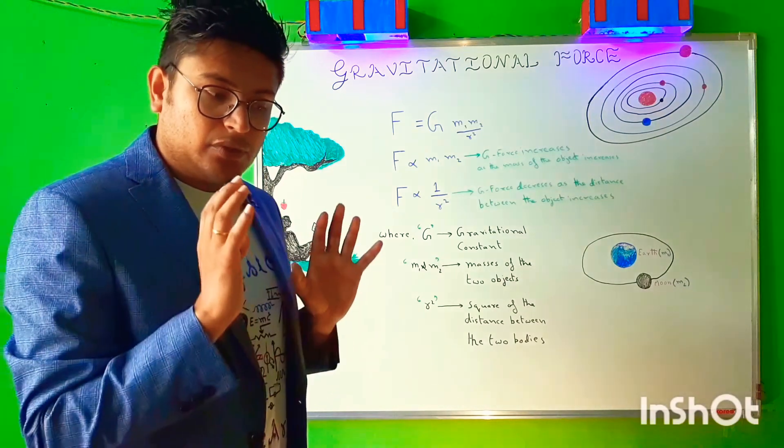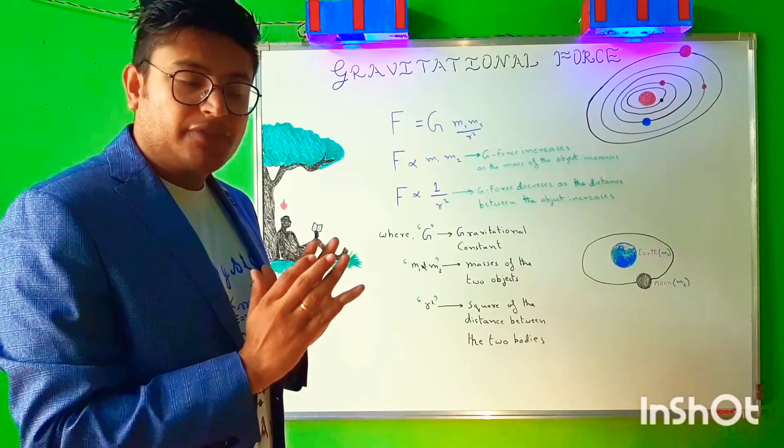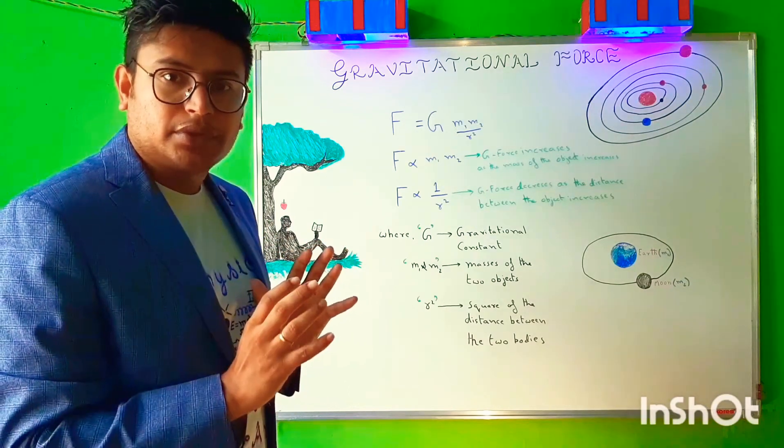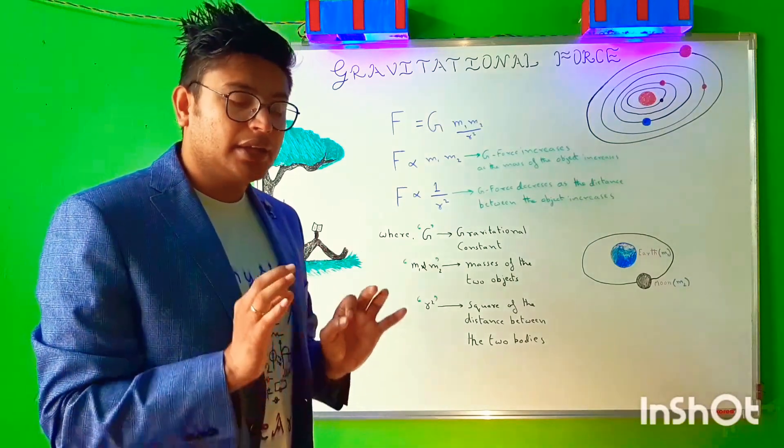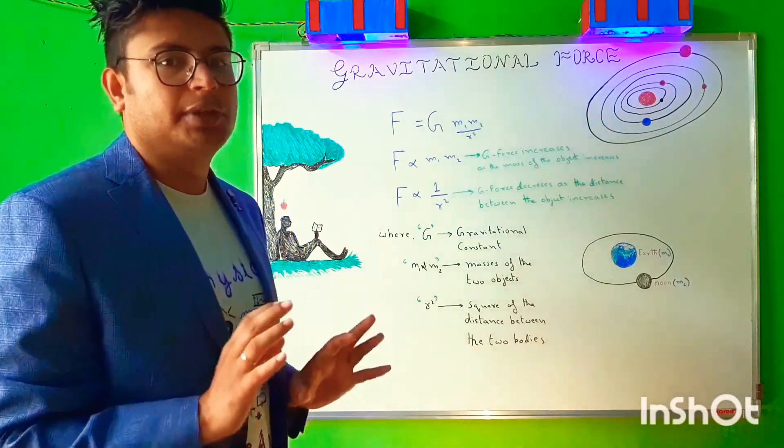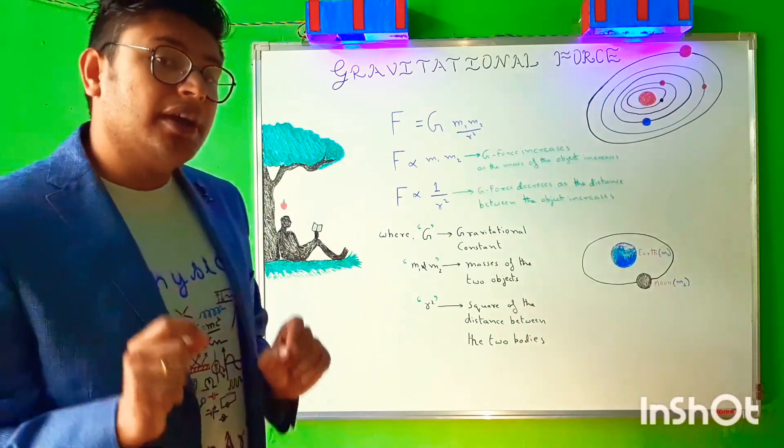The mass of the object - there was a difference of 400 grams between those two objects, yet they fell down and hit the ground at the same time with the same speed. So this is what gravity is.